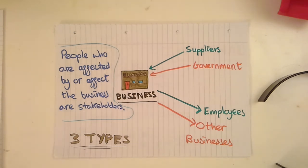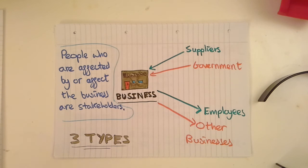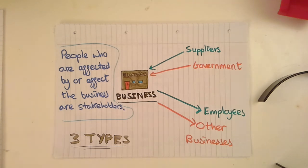These effects could be positive or negative. For example, a supplier could have a positive effect on a business if it lowers how much it charges the business for its materials. At the same time, the government could have a negative effect if it increased corporation tax, and therefore the business is going to have much higher costs.